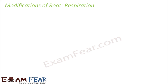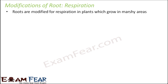Now let's see how roots get modified in certain plants to help in the process of respiration. Respiration is the process through which organisms exchange gases with the environment. This type of root modification is generally seen in plants that grow in marshy areas — wet, muddy, swampy areas where oxygen inside the soil is less available because the soil spaces are occupied by water.